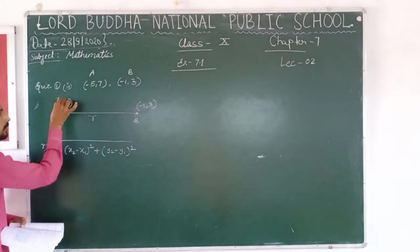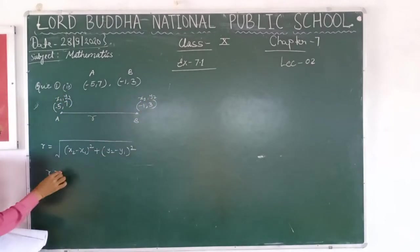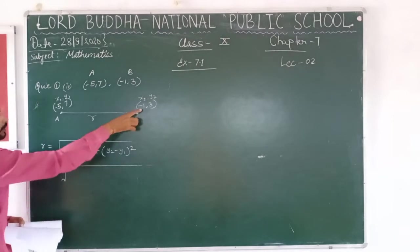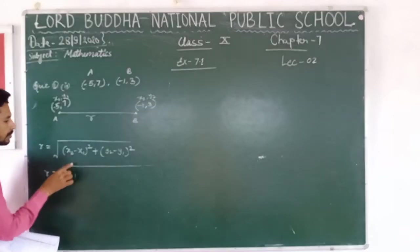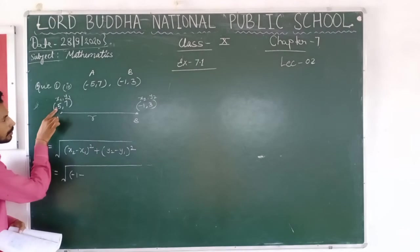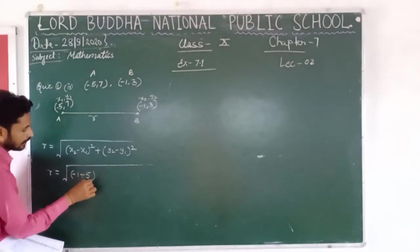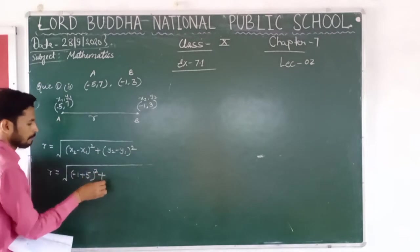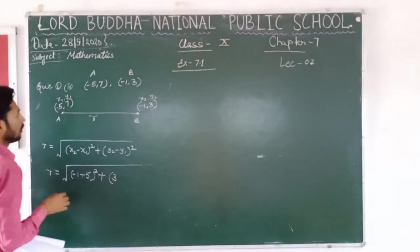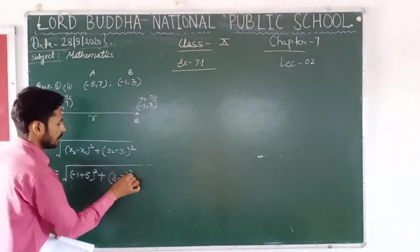So, taking x1 and y1 for point A, and x2 comma y2 for point B: r equals to square root of, in place of x2 there is minus 1, so write minus 1, and minus x1 which is minus 5 — minus and minus will be plus — so that gives 5 whole square, plus the value of y2 which is 3, minus the value of y1 which is 7, square.